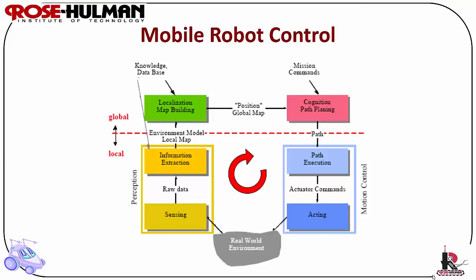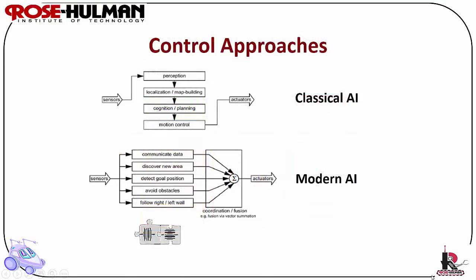Global control occurs less frequently as needed, such as localization, path planning, mapping, etc. Localization and global path planning are slower and should be performed only when needed. There are key differences in the control architectures, and they are described based upon classical or modern artificial intelligence.